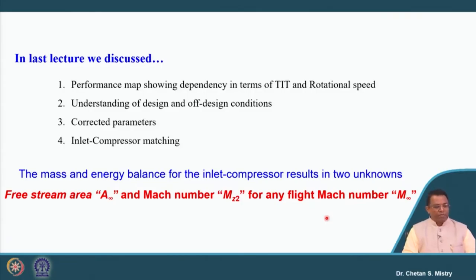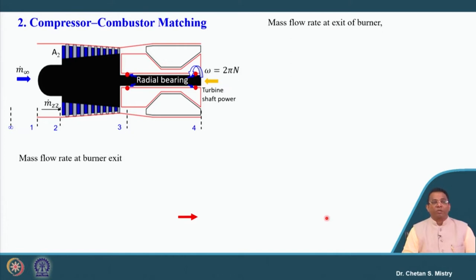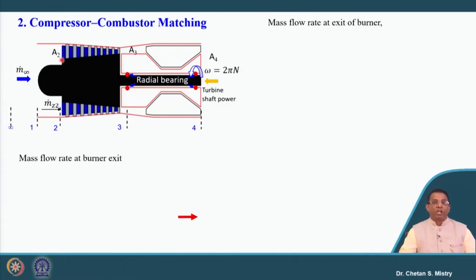Today we will be discussing the next component — compressor and combustor matching. Here, the entry area of the compressor is A2, the exit area of the compressor is A3, and the exit area of the combustion chamber is A4. This A4 is the entry area of the turbine, and the flow will be entering with Mach number M4 at the entry of the turbine.